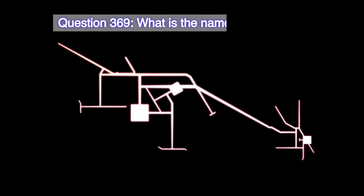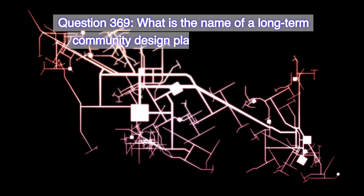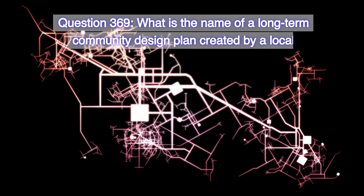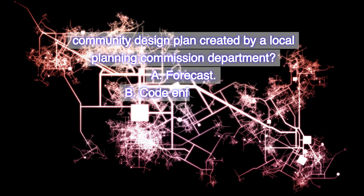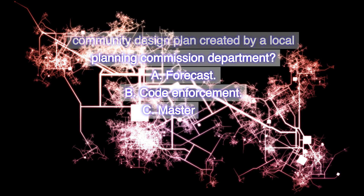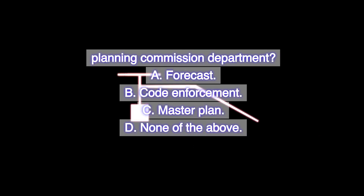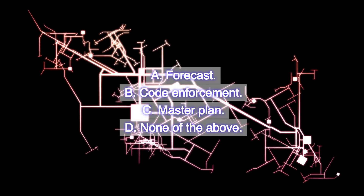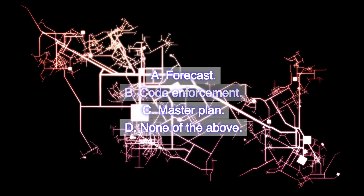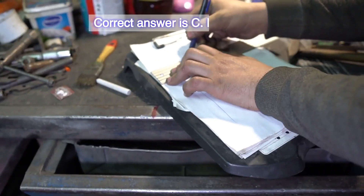Question 369. What is the name of a long-term community design plan created by a local planning commission department? A. Forecast. B. Code enforcement. C. Master plan. D. None of the above. Correct answer is C. Master plan.